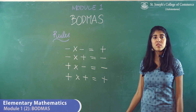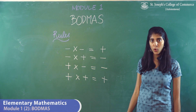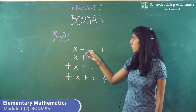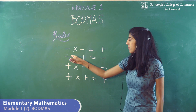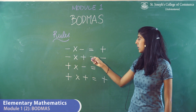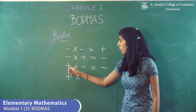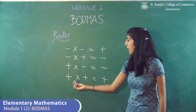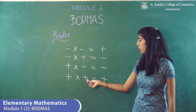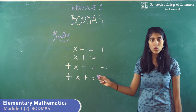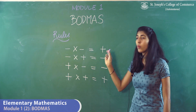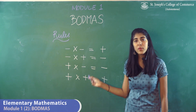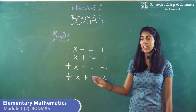Certain rules to remember before solving sums under BODMAS. The first rule is minus into minus gives you plus. Second, minus into plus gives you minus. Third, plus into minus gives you minus. Fourth, plus into plus gives you plus. Same signs when multiplied give you a positive sign, and opposite signs when multiplied give you a negative sign.